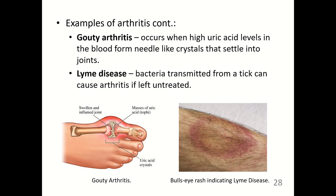Gout arthritis occurs when high uric acid levels form needle-like crystals that settle into the joints; it is usually caused by diet. Lyme disease is bacterial and is transmitted from a tick; if left untreated, it can cause arthritis.